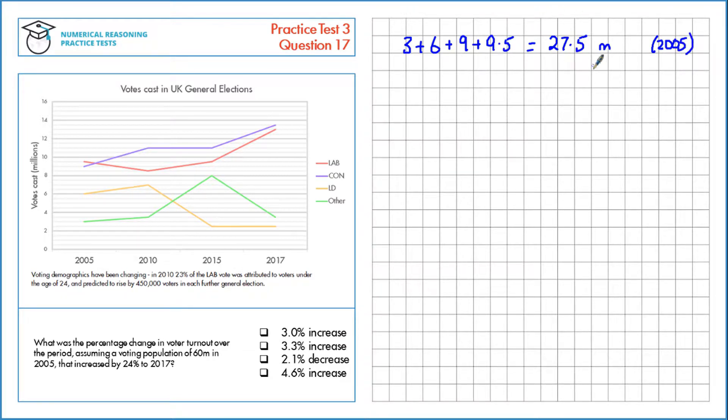If we have the number of votes cast, we can now work out the voter turnout. The proportion of voter turnout is the votes that were cast divided by the total population. Both of these are in millions, so I'm not putting both of those on the end because they'll cancel out anyway. This gives us the answer as a decimal. We want a percentage, so I'll multiply by 100, which gives us a voter turnout of 45.8%.